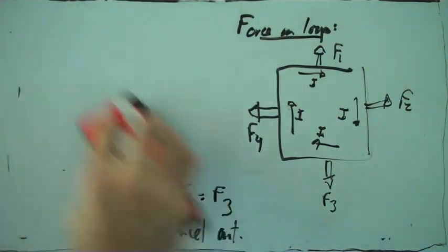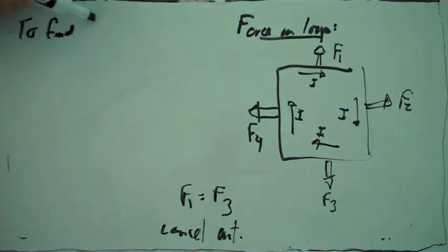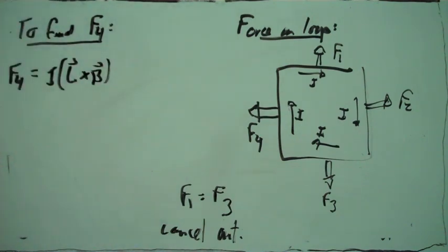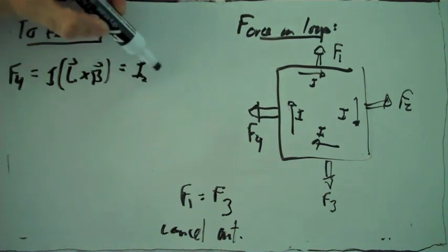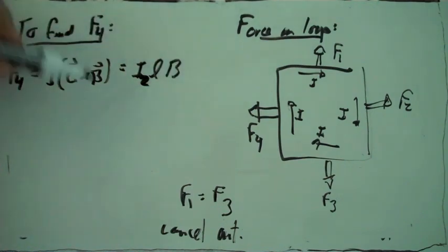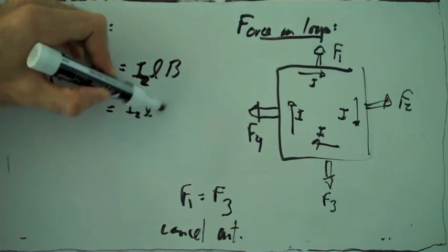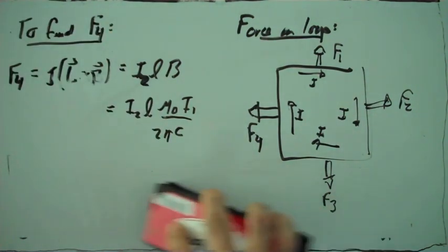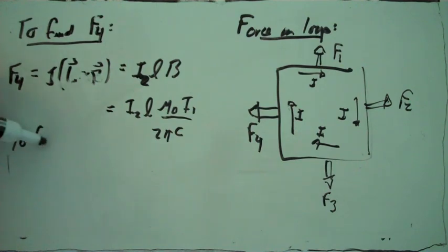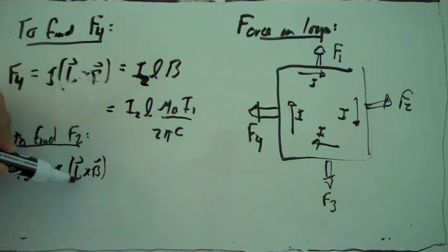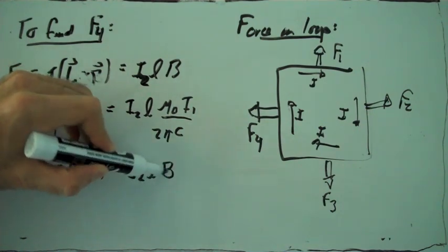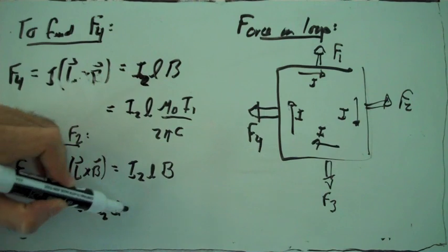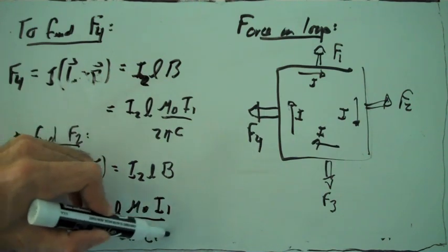The only net forces on the rectangular loop are going to be F4 and F2. F4 is given by the expression for the force on that wire with current. The current is I2, the length is L, and the magnetic field at that point where that part of the square is is given by that expression. To find F2, we do the same expression: the current is I2, the length is L, and the magnetic field where that part of the square is is given by that expression.